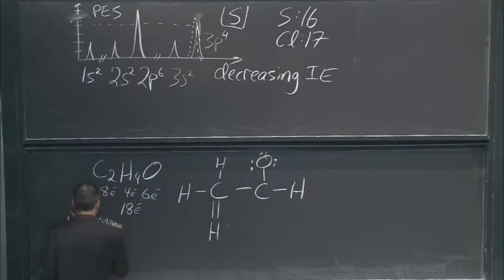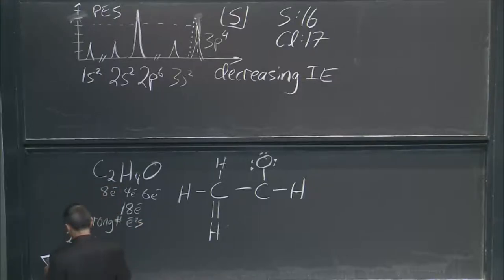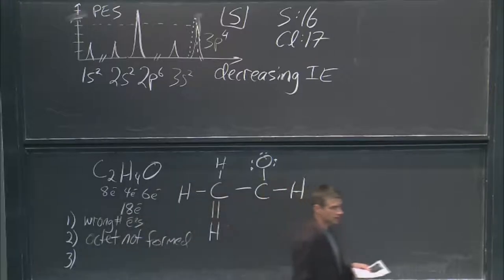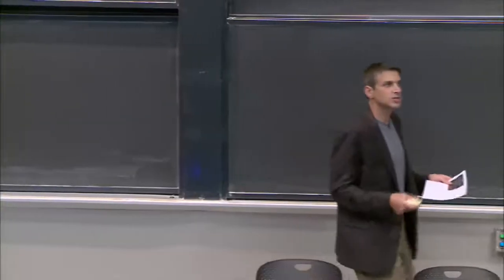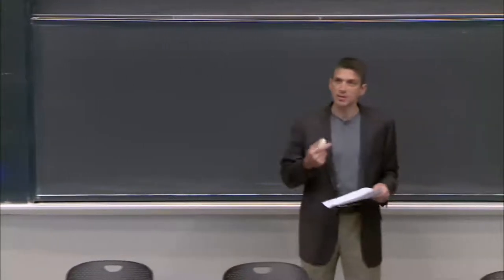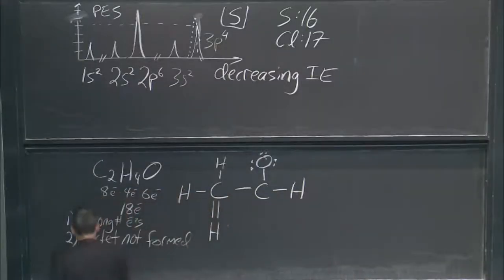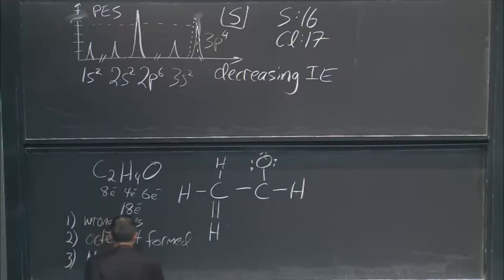So what's wrong: wrong number of electrons and octets not formed. There's something else — another way you can see how this Lewis structure is wrong. What else did we learn on Wednesday? A really important concept: formal charge. Formal charges are all over the place — they're not the lowest formal charge.